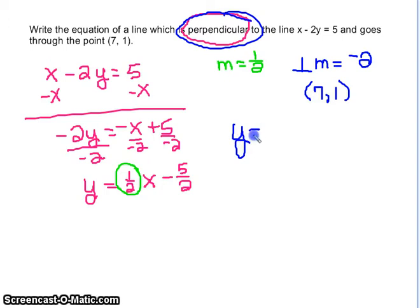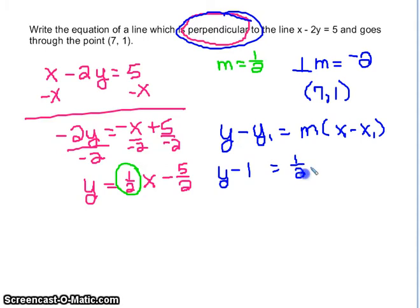So y equals, actually, I'm going to make Miss Little proud and use our other formula, y minus y1 equals m times x minus x1. x1 here is going to be 7, so I get y minus 1 equals 1 half x minus, and if we do 1 half times 7, that's 7 halves, and I have to add 1 to both sides.